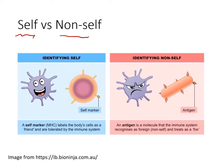Your immune system has cells called white blood cells. They are able to check on the surface of all cells they come into contact with, looking for something called a cell marker — a self marker. All the cells within your body have a unique set of markers called the MHC markers, which distinguish them from cells of other individuals.